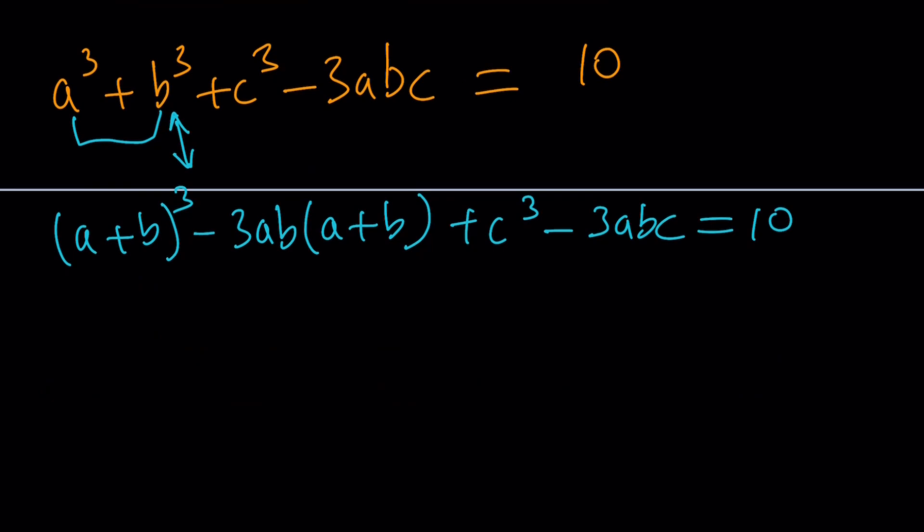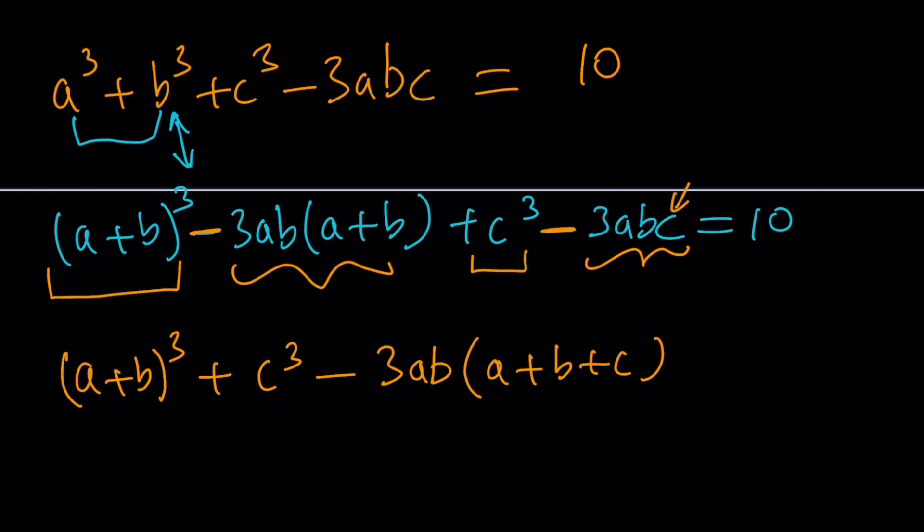Now, here's what we got. We got something like this and that. So, if a + b is replaced with something like, let's say, x. This is going to become like x³ + c³, which is the sum of 2 cubes. Exactly that's what it is. So, we're going to write this as sum of 2 cubes, like this. And the rest is also nice because they have a common factor, which is -3ab. Do you see that? And that's going to give us a + b + c. Cool, cool. Now, this is equal to 10.